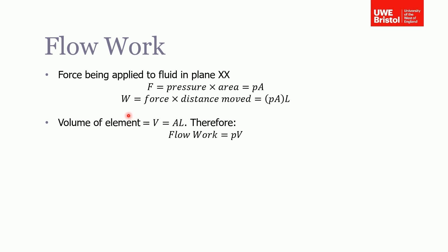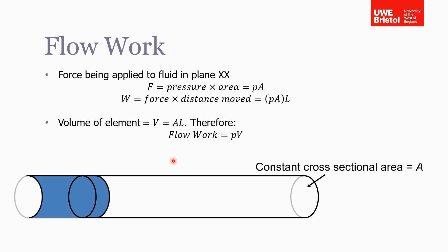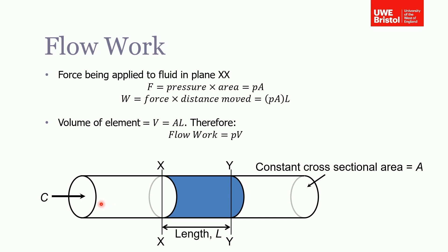In terms of flow work, if we consider this pipe work here, and it has a constant cross-sectional area A, and the fluid is flowing through the pipe at velocity C. If we just consider this slug of fluid in the middle that's bound by this plane X, and a length L away, we have another plane Y. To push this fluid through the pipe, we need to apply a pressure to it, or apply a force to it. The force that's applied at plane XX, the force is the pressure times the area, so P times A.